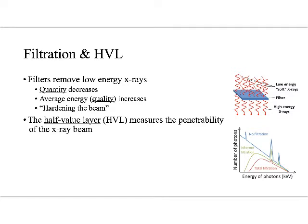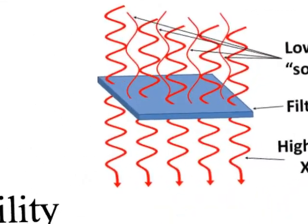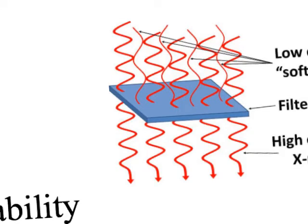The way we measure beam quality is with the half value layer. Looking at the graphic: on the unfiltered side we have both short-wavelength high-energy x-rays and long-wavelength low-energy x-rays. What the filter does is stop the low-energy long-wavelength photon while allowing the high-energy short-wavelength photon to keep on traveling. We didn't lose anything helpful — we just filtered out the stuff that was not helpful, the low-energy x-rays.